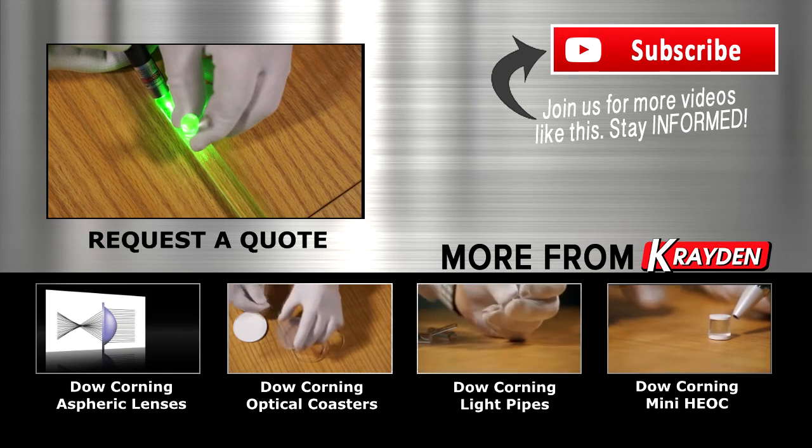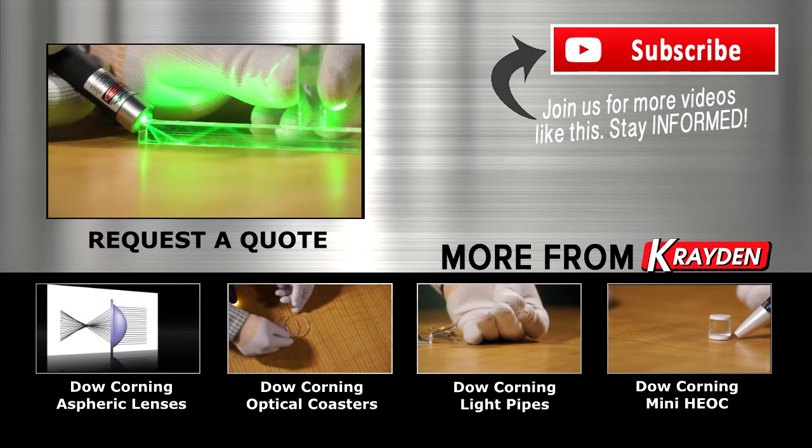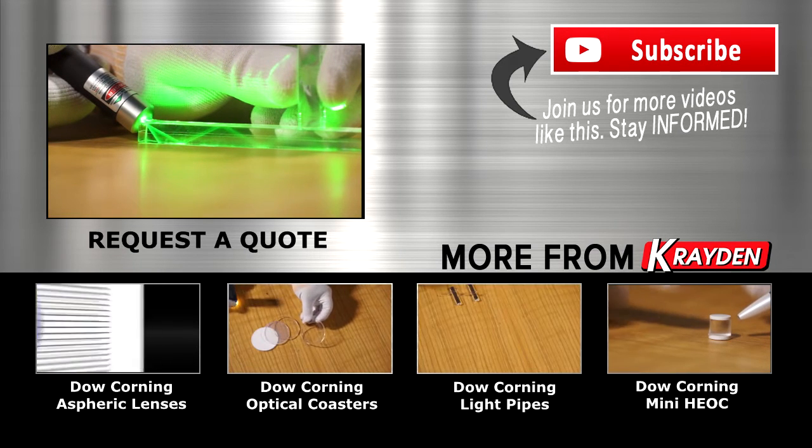This light extraction is useful in some designs. This can also be accomplished by roughening the portion of the mold where the light extraction is desired.